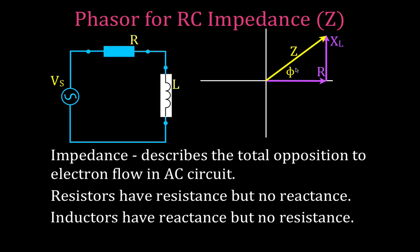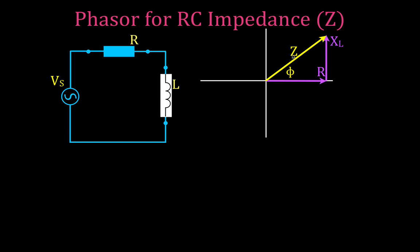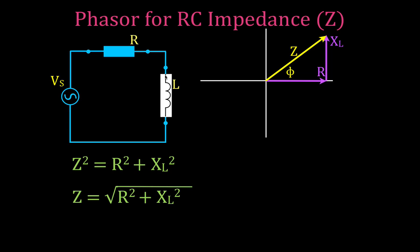We also have the angle phi again, which should be the same value you get from the voltage triangle — you can use that to check your work. Using the Pythagorean theorem: Z squared equals R squared plus XL squared, so Z equals the square root of R squared plus XL squared. This is our phasor diagram for impedance — the impedance triangle. The arctangent of phi equals the opposite over the adjacent: the inductive reactance XL over the resistance R, giving you the angle phi.